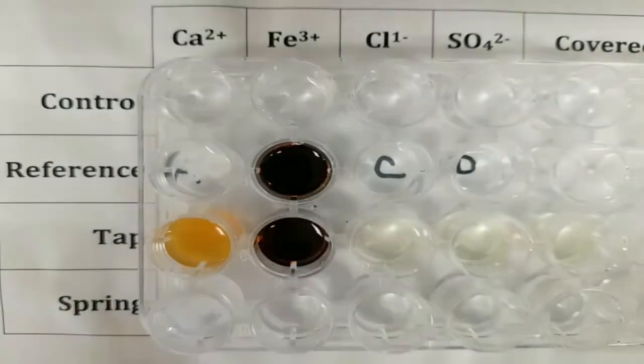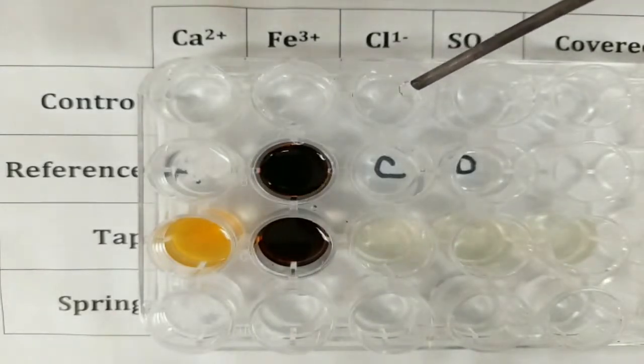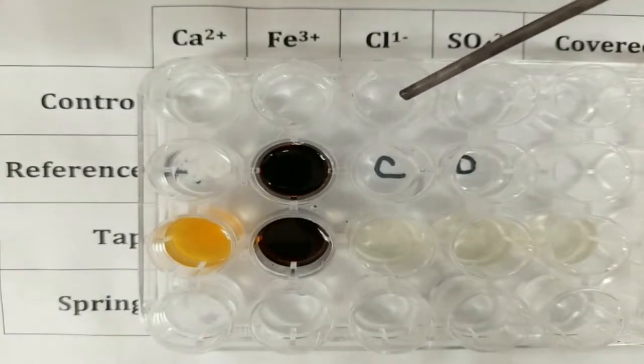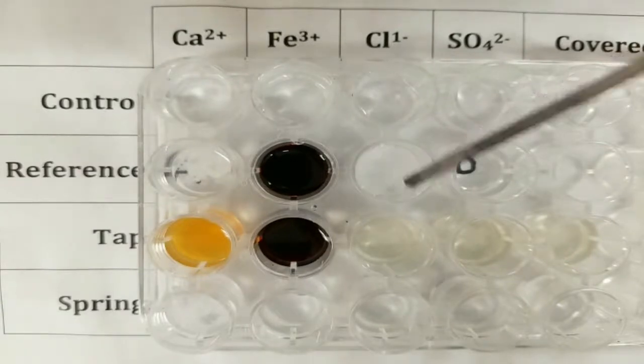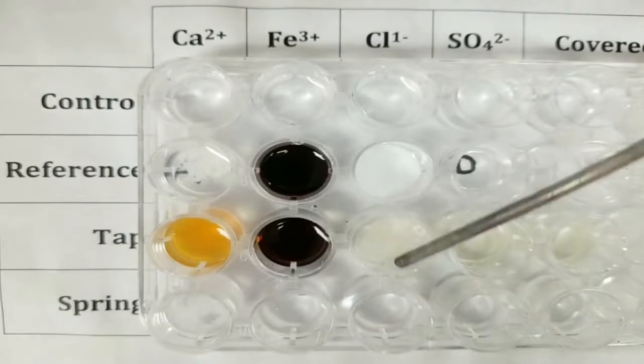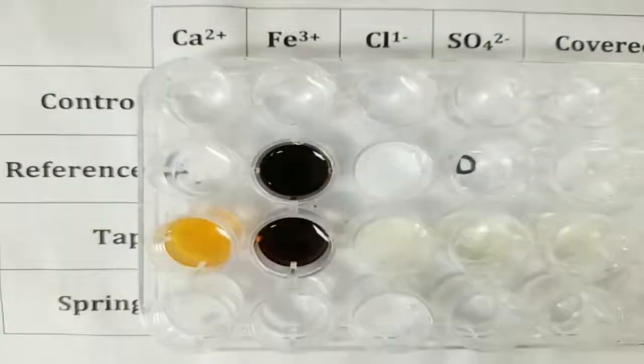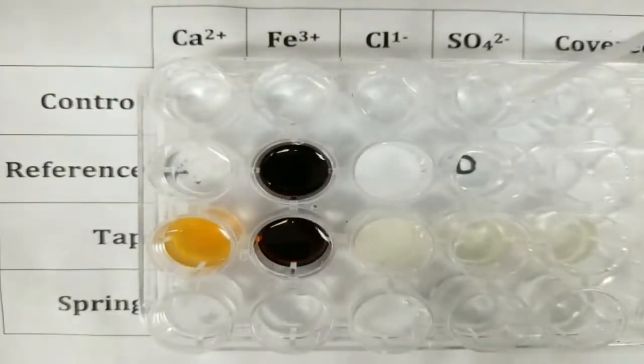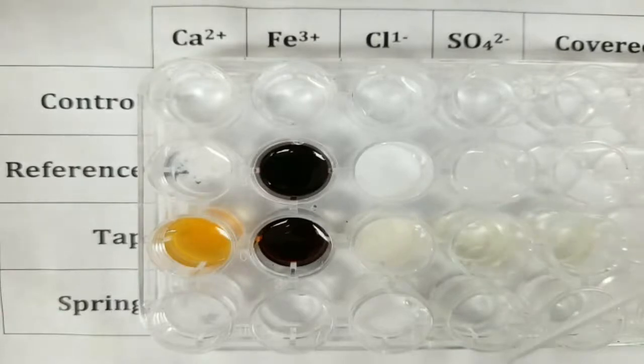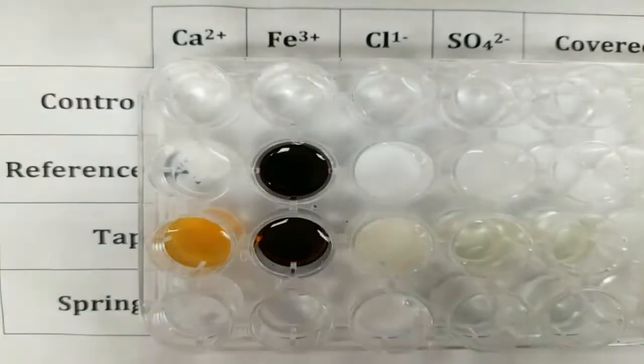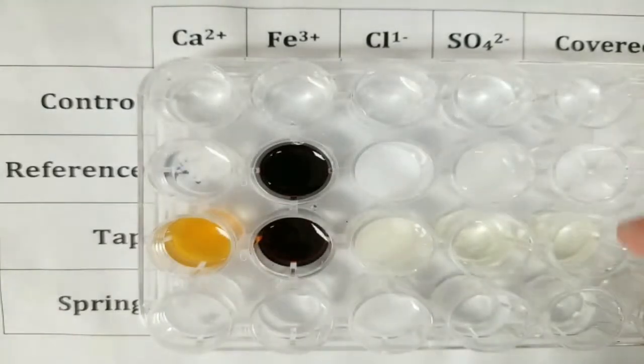Then we have the chlorine test. And last but not least, the sulfate test. Now, again, the fifth column that I had here, the one here, these have those substances without tests being done. That way we can get a good look at them. Now you can see that there are several clear reactions and several things that reacted. But remember, it has to match the reference. The reaction must match the reference.